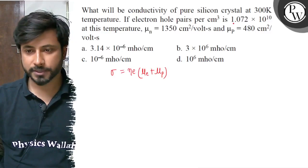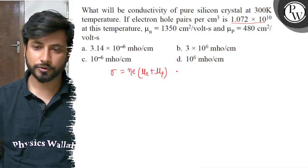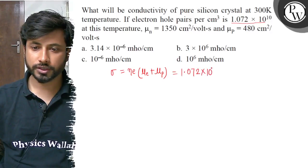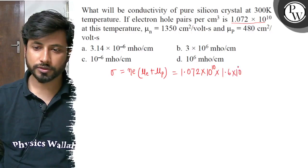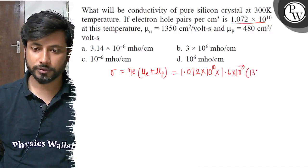Our electron hole pairs per centimeter cube n value is 1.072, here we put 1.072 into 10 to the power 10 into electronic charge 1.6 into 10 to the power minus 19 into mu e plus mu p. Mu e is